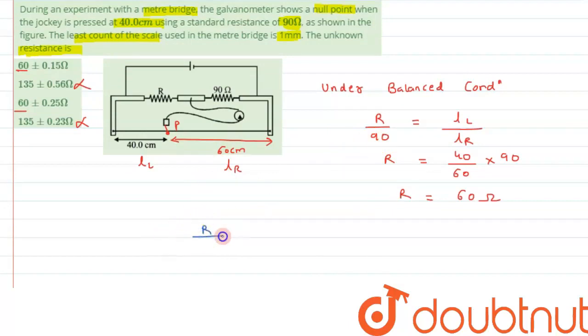The formula was R by 90 equals LL by LR. This can be written as LL by 100 minus LL, since the total length is 100, so we can write LR as 100 minus LL.